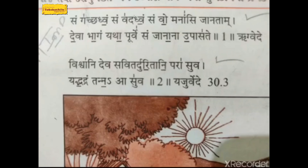Gachadvam: 'gach' is the root verb and 'dvam' is the suffix, so it is the imperative — agnyarth, atmanipad, madhyampurush, bahuvachan. Similarly, vadadvam: 'vad' is the root verb and 'dvam' is the suffix, making it also agnyarth, atmanipad, madhyampurush, bahuvachan. You should remember that these are imperative verbs with the 'dvam' suffix.